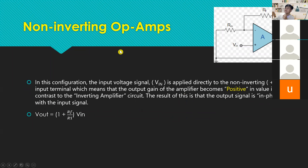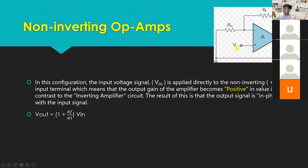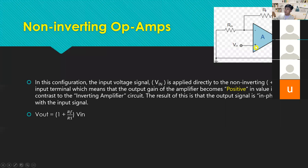We can configure it as non-inverting or inverting. For the non-inverting amplifier, the voltage input goes through the positive pin — that's why it's called non-inverting. We have two pins: one negative and one positive. If it's non-inverting, your voltage input should go through the positive pin.